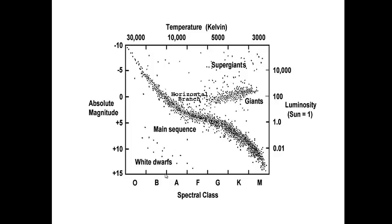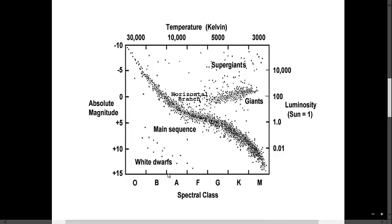However, a B9 star would still be warmer than an A0 star, which is the next class on the HR diagram. Our star, the sun, is a G2 star.